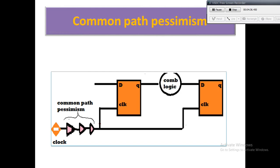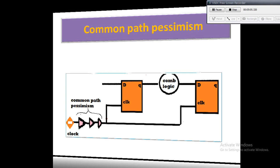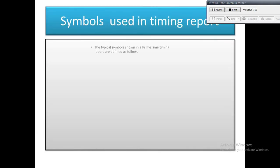An important term related to timing path analysis is CPPR — Common Path Pessimism Removal. Common path pessimism arises when the launching and capturing clocks share a common path. The difference between the maximum delay and minimum delay of this common clock path segment is called the common path pessimism. The EDA tool takes care of this using Common Path Pessimism Removal, i.e., CPPR.